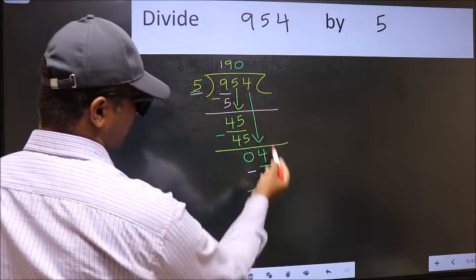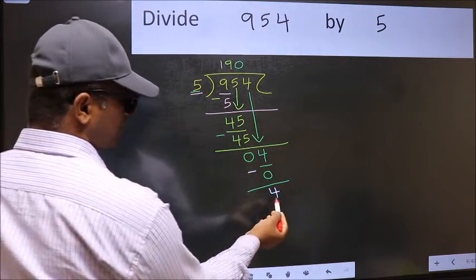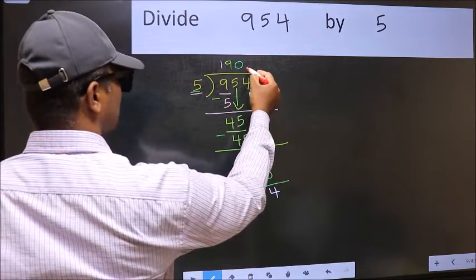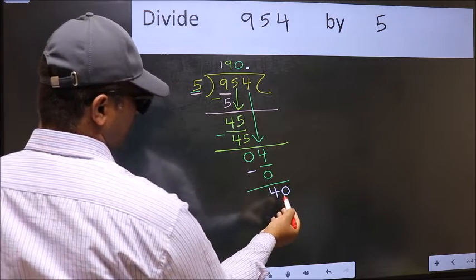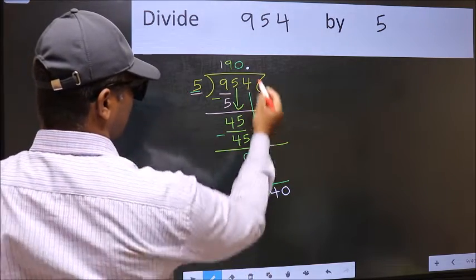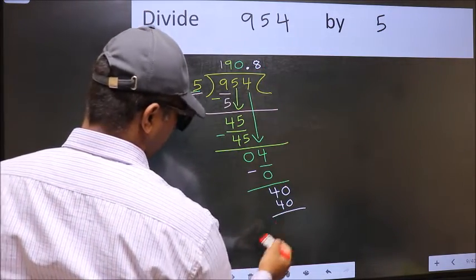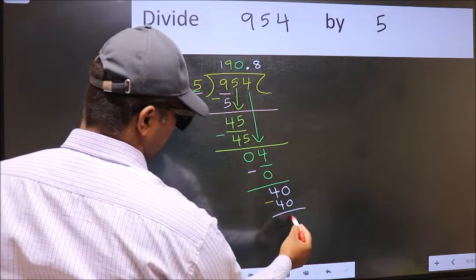Over here, we did not bring any number down. And 4 is smaller than 5. So now you can put dot and take 0. So 40. When do we get 40 in 5 table? 5 eights, 40. Now you should subtract. 40 minus 40, 0.